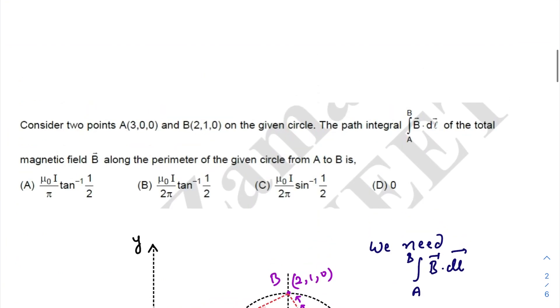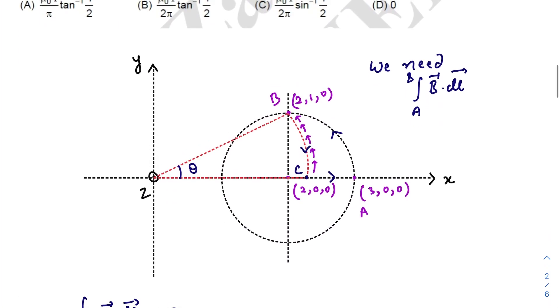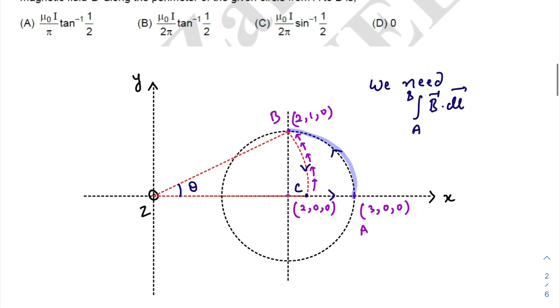The first question is: consider two points A(3,0,0) and B(2,1,0) on the given circle. Find the path integral from A to B of B dot dl of the total magnetic field along the perimeter of the given circle. So we need to find this line integral of the magnetic field along this perimeter.